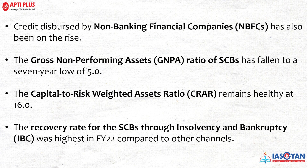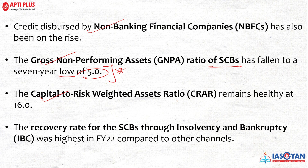Credit dispersed by non-banking financial companies has been on the rise, with NBFCs dispersing higher amounts to fintech companies and startups. The gross non-performing asset ratio for scheduled commercial banks has fallen to a 7-year low of 5.0% — a factually important number for mains examination. The Capital to Risk-weighted Assets Ratio (CRAR) has remained healthy at 16.0%. Recovery rate for scheduled commercial banks through insolvency and bankruptcy proceedings was highest compared to other channels.